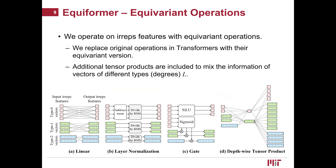Since the internal representations are non-equivariant irreps features rather than typical scalar features, we need equivariant operations to transform those features. The operations consist of two parts. First, we replace original operations in transformers with their equivariant versions, including linear layer, layer normalization, and activation function. Second, we introduce additional tensor product operations to mix the information contained in vectors of different types — for example, mixing the information of scalars and Euclidean vectors.